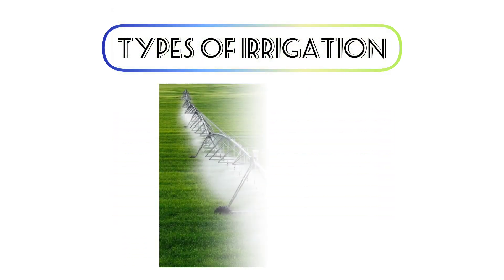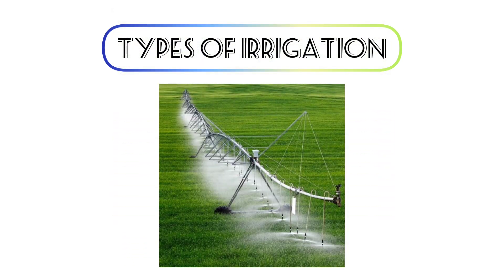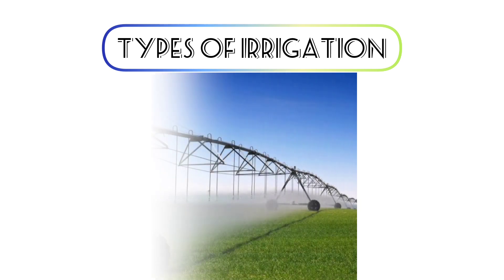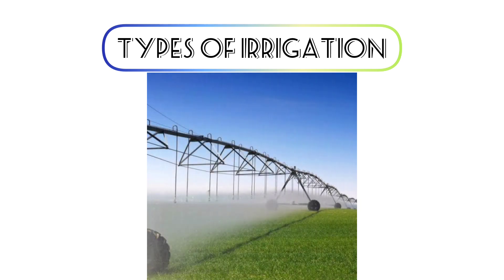The next one is center pivot irrigation, where water is scattered throughout the land by a machine of sprinklers that move on wheeled towers in 360 degrees. Another one is lateral move irrigation.